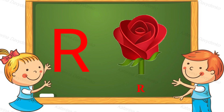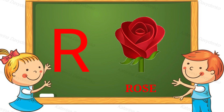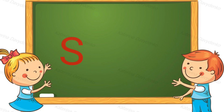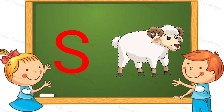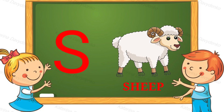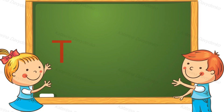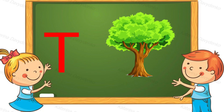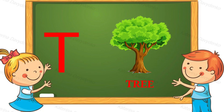R for rose, S for sheep, S for sheep, E for greening.